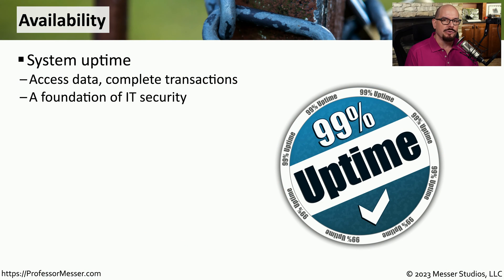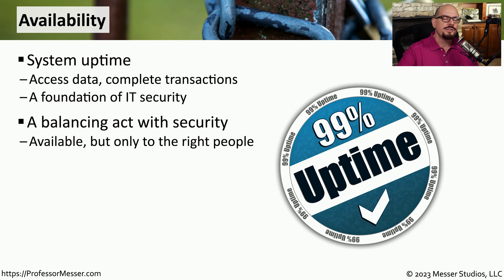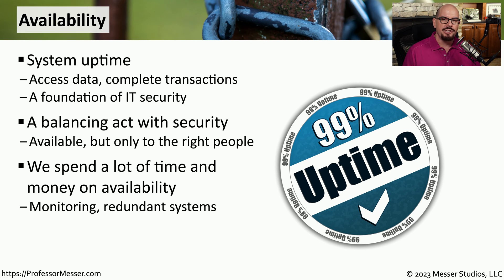When we connect to a website or start an application, we want to log in, run transactions, or use the capabilities of that website. We expect that those resources will be up and running, and we refer to that as availability. In the world of security, there's a nuance with availability — we want to make sure that our systems and resources are available, but only to the right people.